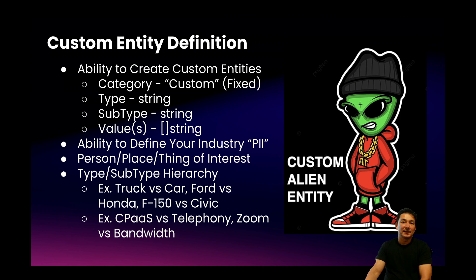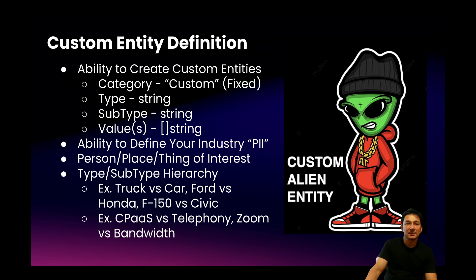One thing I wanted to highlight is the type-subtype capabilities. An example of a type-subtype could be car versus truck versus SUV, and then have subtypes like Ford versus Honda with values of F-150 and Civic. There are a lot of opportunities to classify or categorize your entities into higher-level constructs to use these notifications for specific things where the type or subtype is actually what you want to receive the notification for.